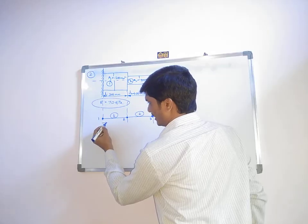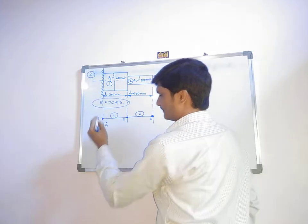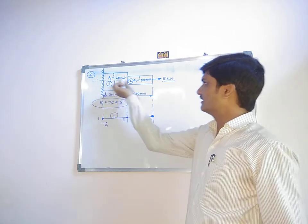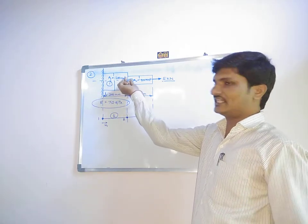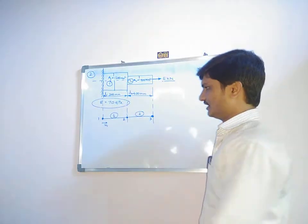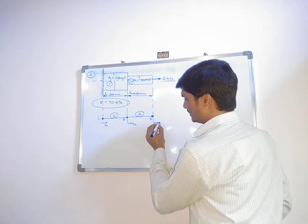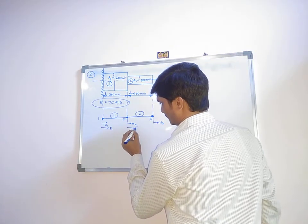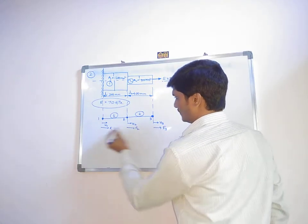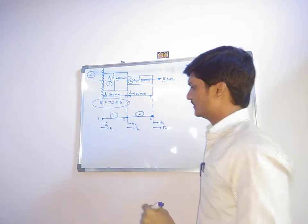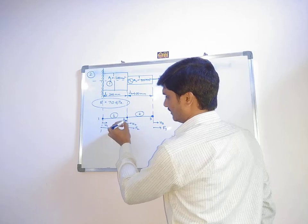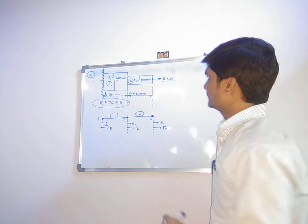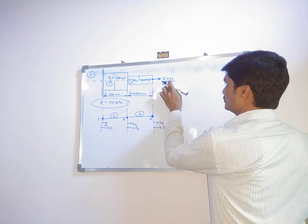Now we apply boundary conditions. The deformation at node 1 is u1, at node 2 is u2, and at node 3 is u3 — these represent deformations at the fixed end, the cross-section change, and the free end respectively. The forces are F1, F2, and F3 at nodes 1, 2, and 3. We have the applied load of 5 kilo-newtons.